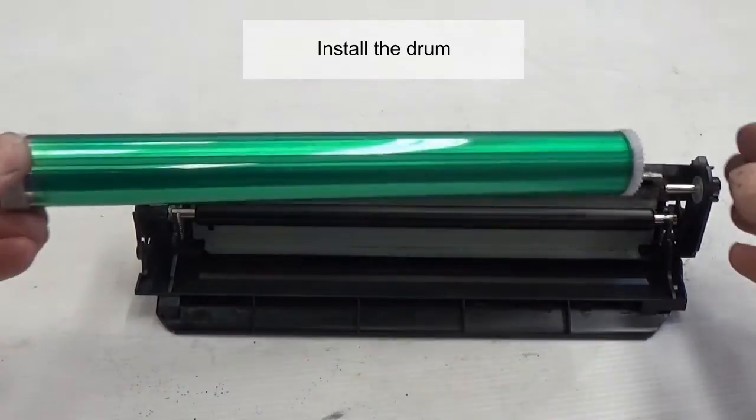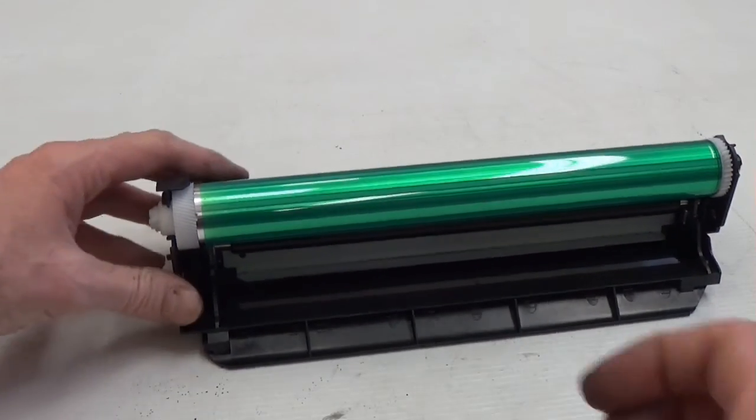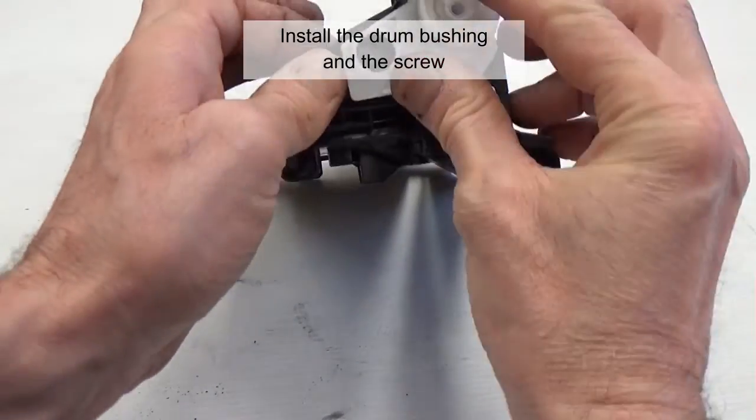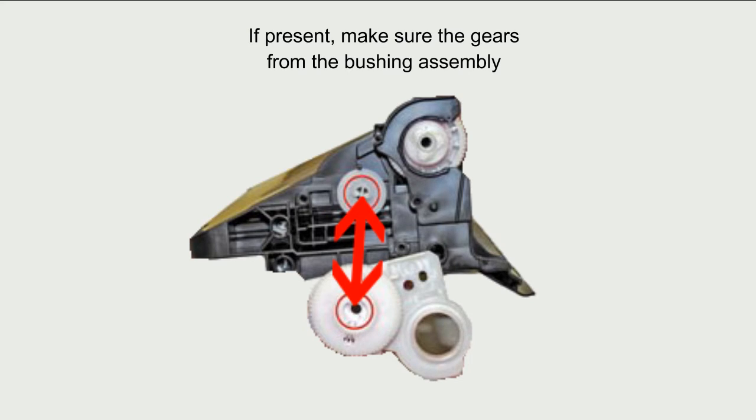Install the drum. Install the drum bushing and the screw. If present, make sure the gears from the bushing assembly are aligned with the drive gear on the hopper.